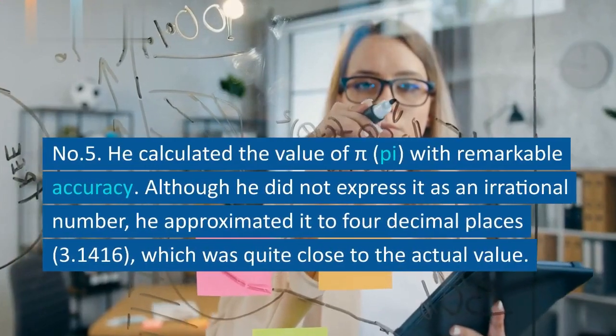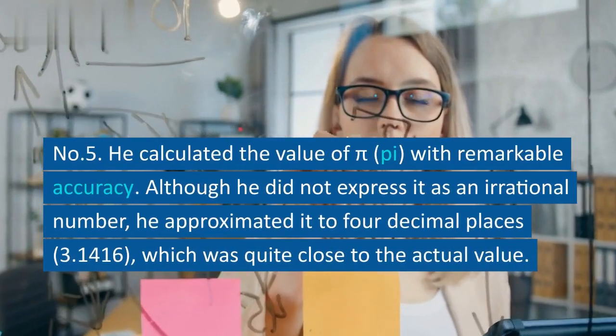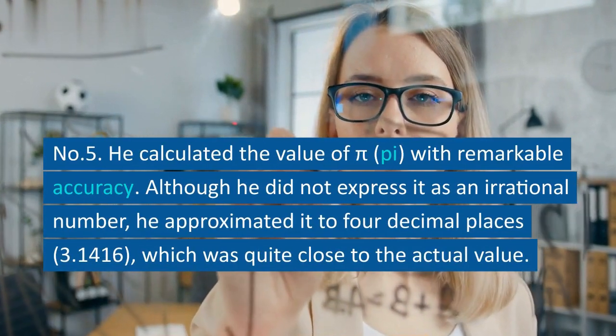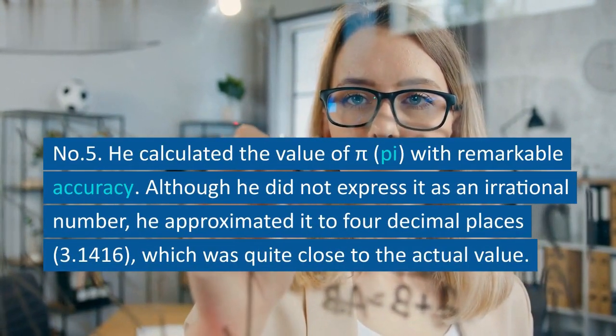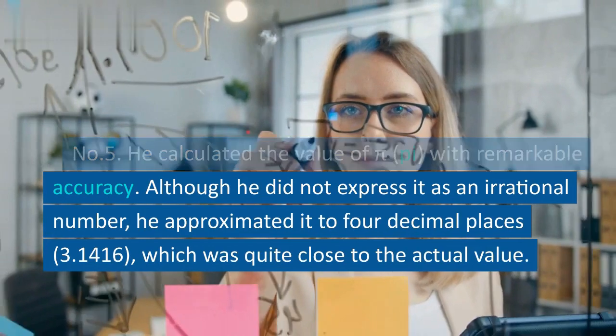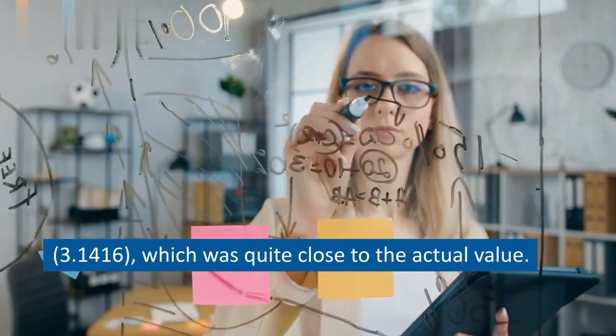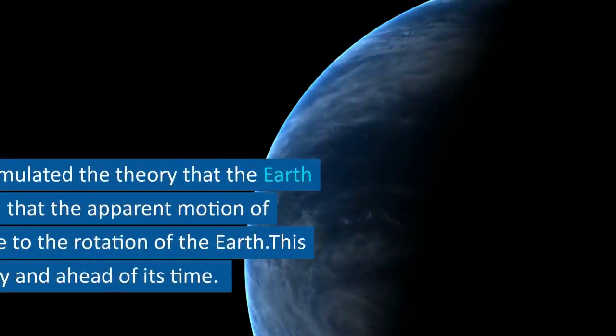Number 5. He calculated the value of pi with remarkable accuracy. Although he did not express it as an irrational number, he approximated it to four decimal places, 3.1416, which was quite close to the actual value.